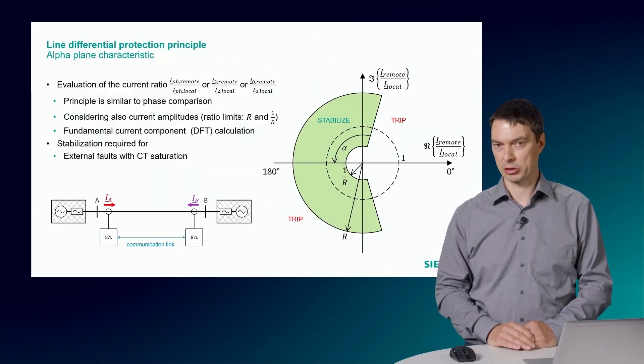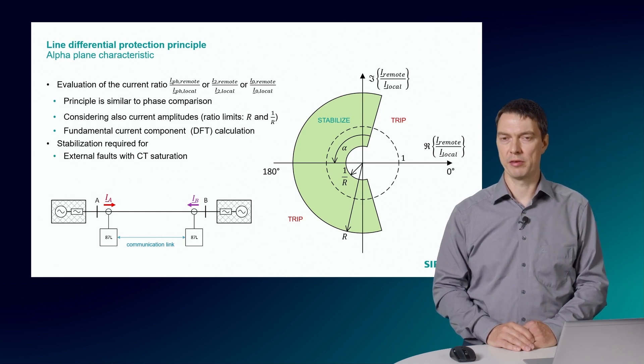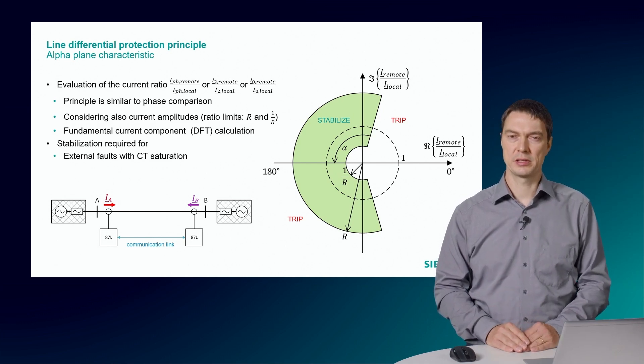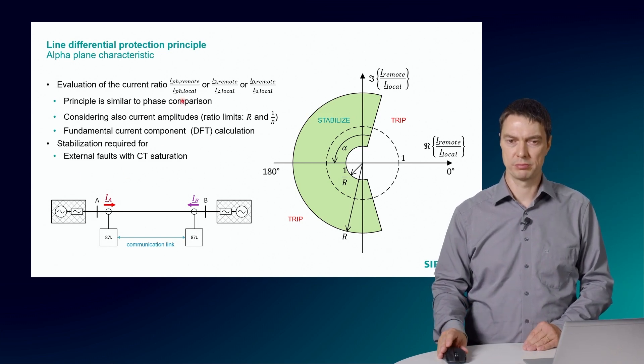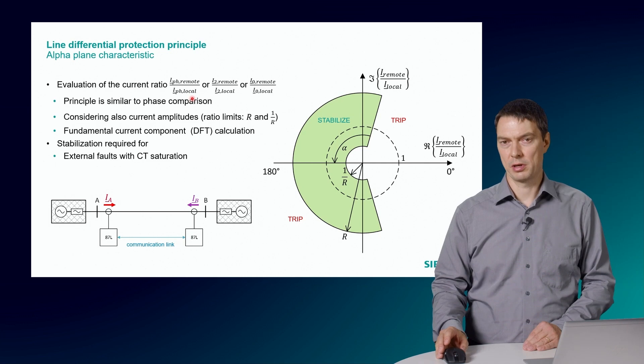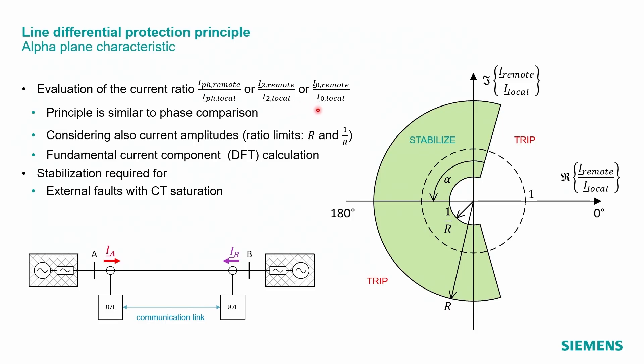An enhanced phase comparison principle, which also considers the current amplitudes, is a so-called alpha-plane characteristic. In addition to the evaluation of the phase difference, the ratio of the local and remote current amplitude is made. Phase currents and or negative sequence and or zero sequence phases are evaluated. For load or external fault conditions, both current magnitudes are similar in their value. The ratio is close to 1. This will result in a circle.